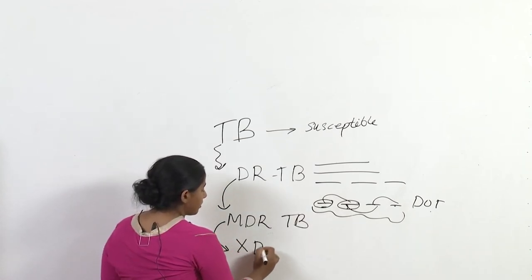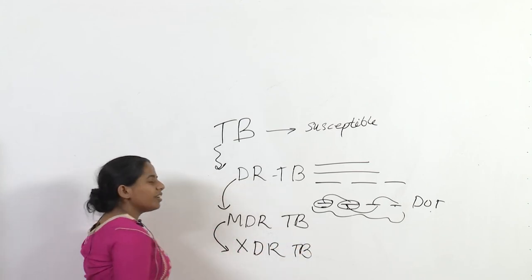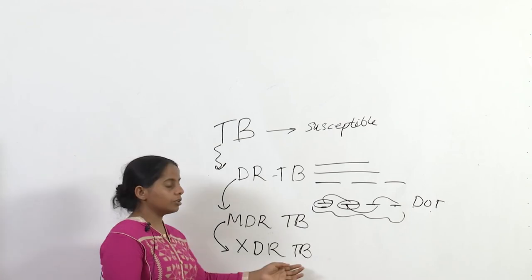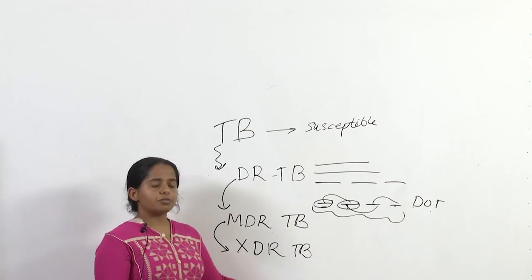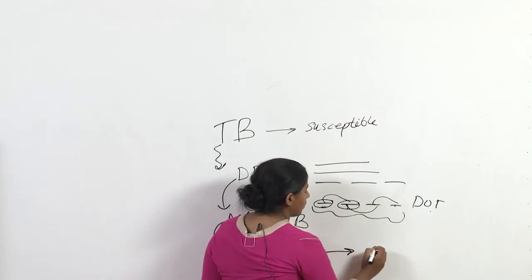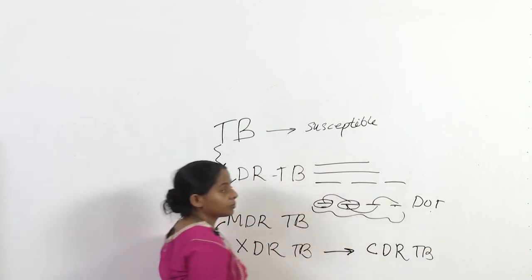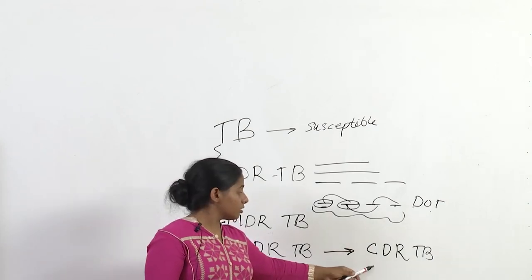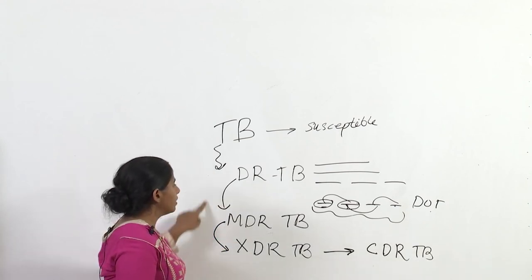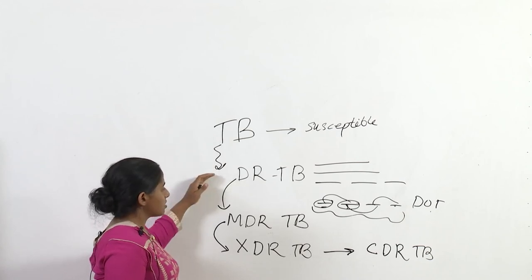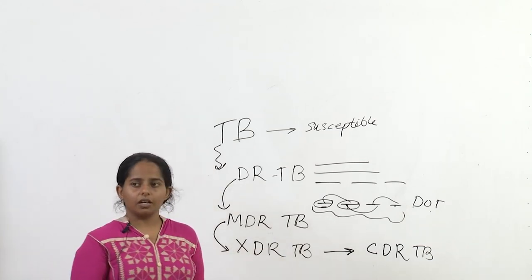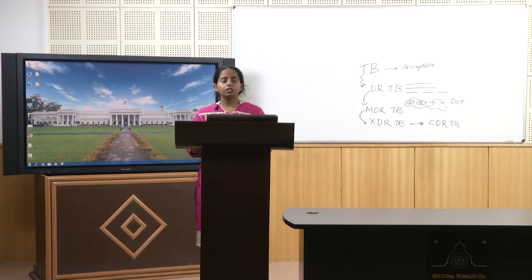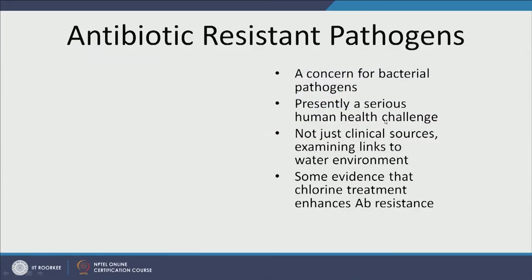Then we encountered extremely drug-resistant tuberculosis. Even at very high doses, drugs may struggle to kill the bacteria. There are now instances where people believe we have completely drug-resistant tuberculosis — not responding to any drugs. Incidences are still low and there is argument over whether to formally declare this. But this example shows how within less than three decades, tuberculosis progressed from drug-resistant to extremely drug-resistant. This is a serious human health challenge — we are going back to a post-antibiotic era.